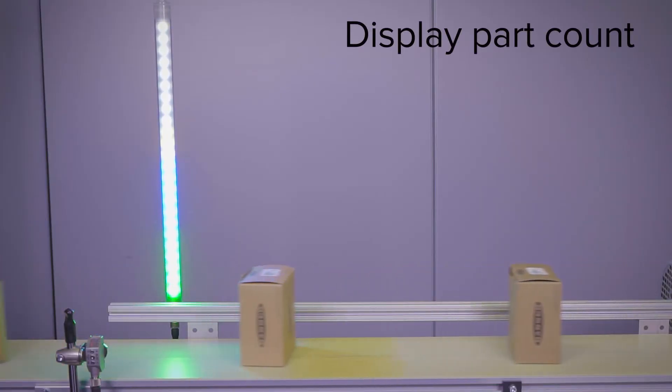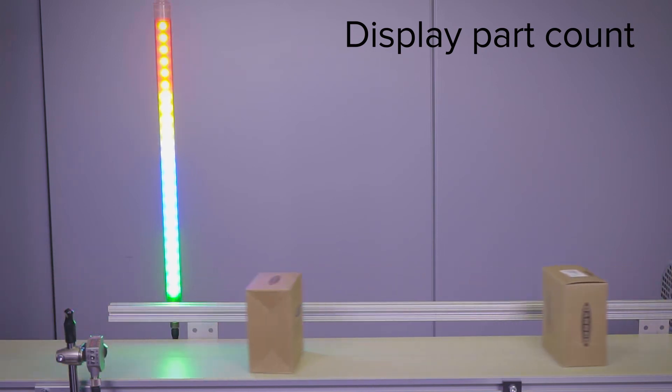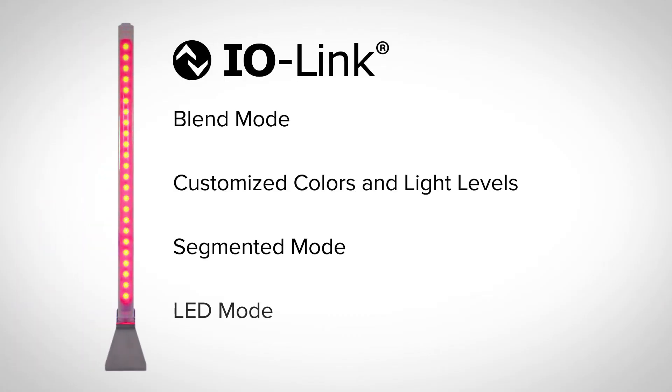Connect to standard sensors to display part count or connect to a touch button to start and stop the internal timer, all without a controller. IO-Link models have advanced operations and help simplify buying, setup, and maintaining equipment.